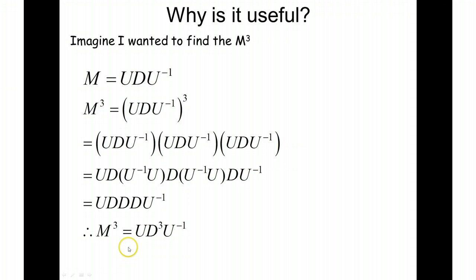So in fact, our matrix cubed is just going to be our matrix of eigenvectors multiplied by my diagonalized matrix of eigenvalues multiplied by the inverse matrix U. So we'll have a look at using this in an example.